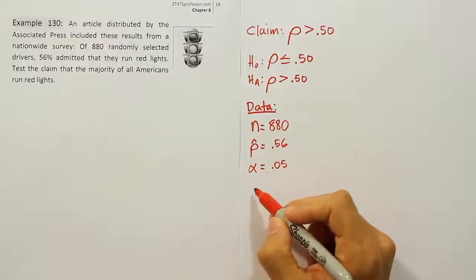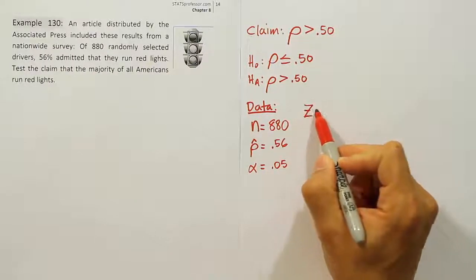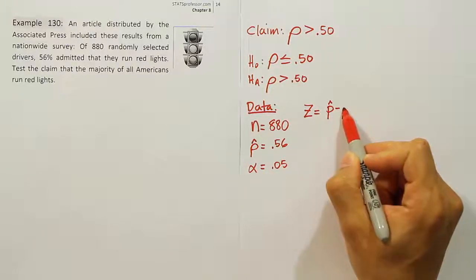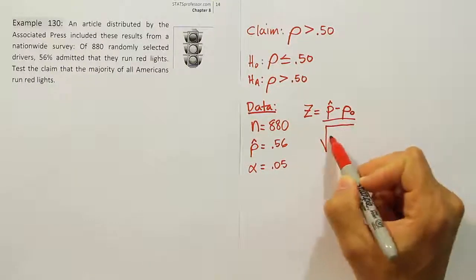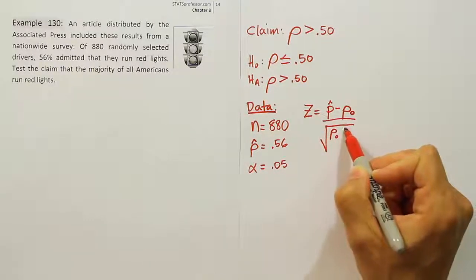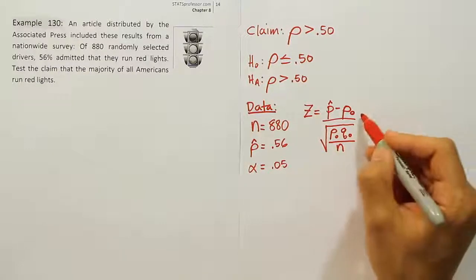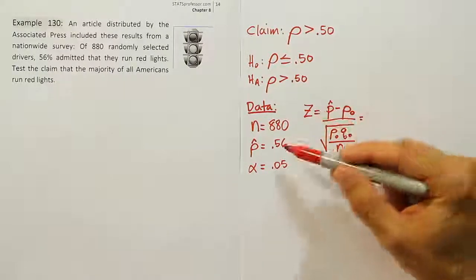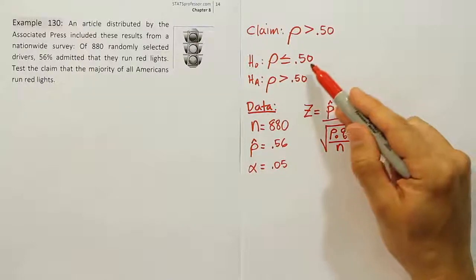From here we enter this into our test statistic formula. The test stat formula is z = (p-hat - p₀) / √(p₀q₀/n). Let's start with p-hat, which is 0.56, and the proportion from the null hypothesis p₀ is 0.50.